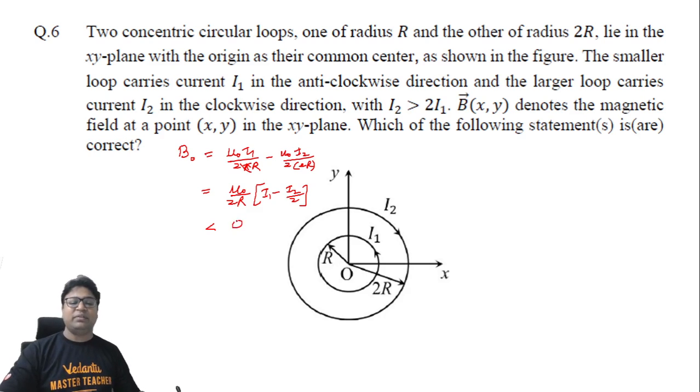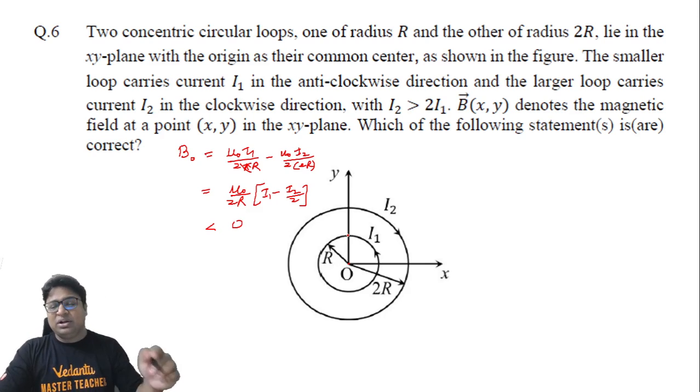Which basically means that the field of the outer loop is going to dominate, and hence the magnetic field at center will be in the inward direction. So that is one thing that we have concluded.